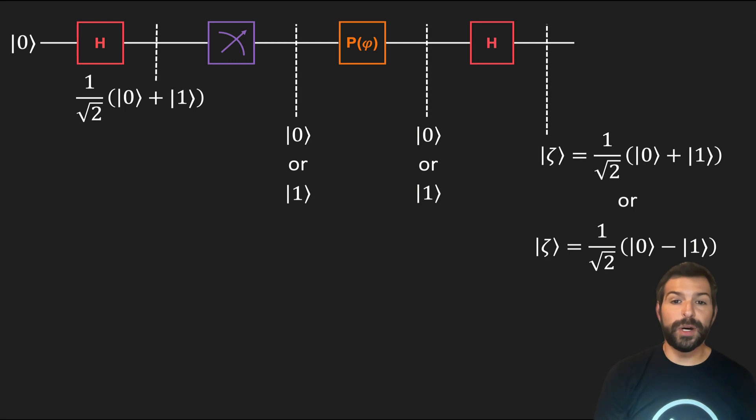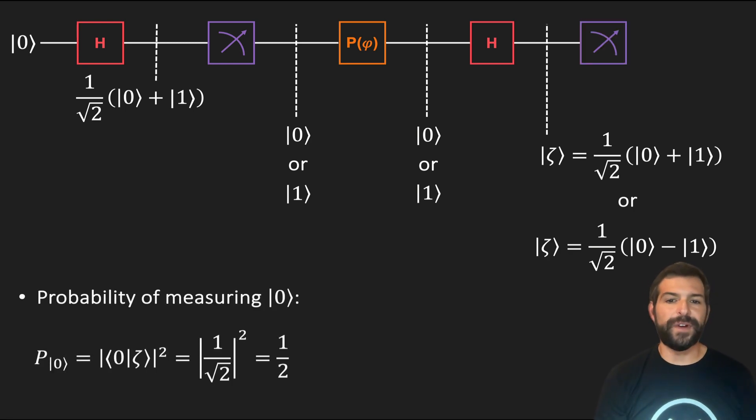Now recall that in this model, the probability of measuring a 0 corresponds to finding the particle at a given location, and the probability of 1 is that of not finding the particle in that same spot. So what this tells us is that it is equally likely to find or not find a particle in any given y coordinate on the screen. In other words, we get a constant probability distribution irrespective of the value of phi. So no interference.